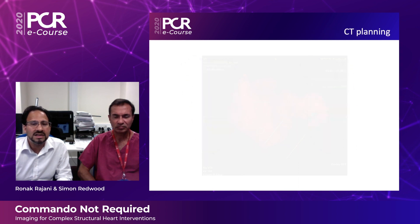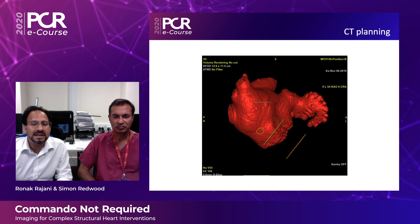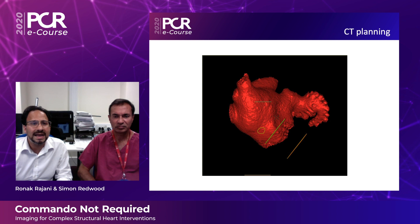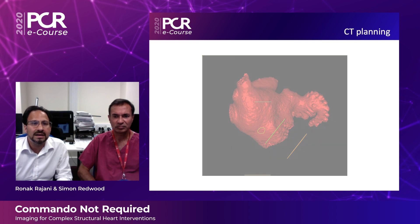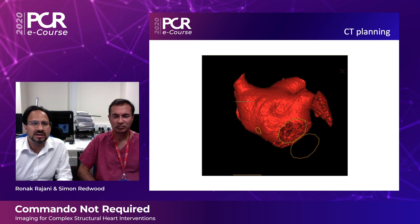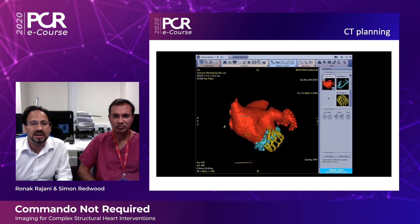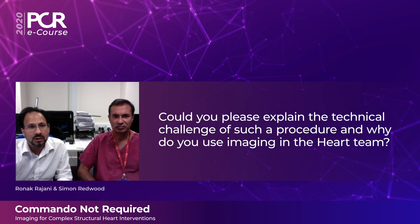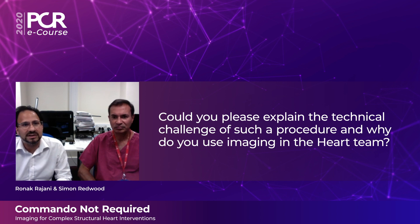The third step in our imaging planning is to take the CT scan data set, perform segmentation, and draw planning lines on the GE Valve Assist 2 platform. This then enables the interventional cardiologist to have live CT-guided fluorofusion to guide the procedure at the time of implantation. We're now going to move through the procedure where Simon will take you through the actual steps.